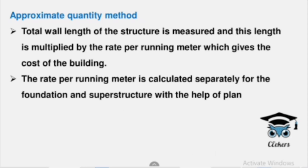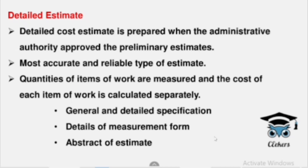With approximate estimates, we eventually need detailed estimates. Detailed estimates are needed for Administrative Sanctions and Technical Sanctions. The Detailed Estimate is the most accurate. We need to separate the quantity of items of work, calculate the cost, and multiply by the rate. I will tell you about detailed specifications — we have to prepare data and estimate the items, including the work.